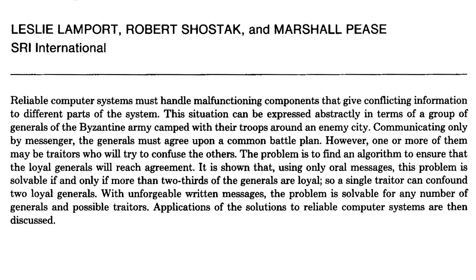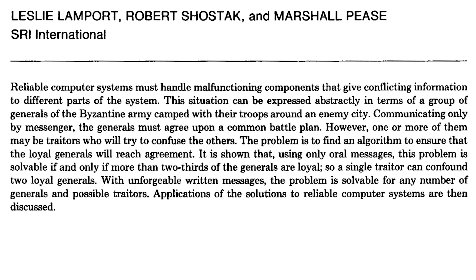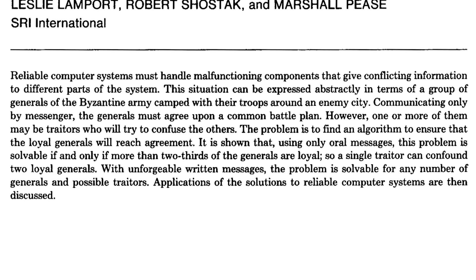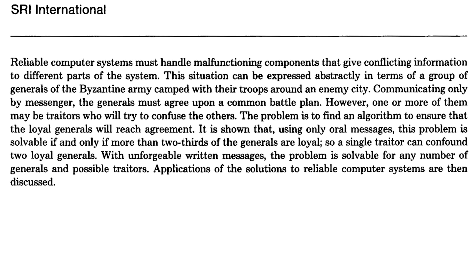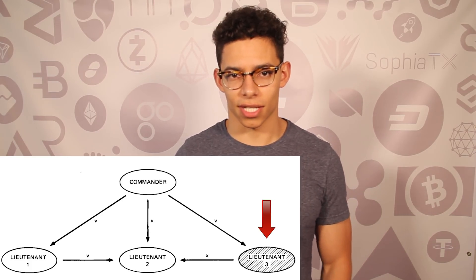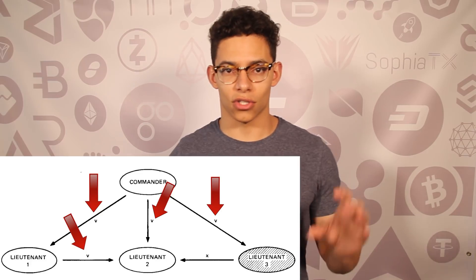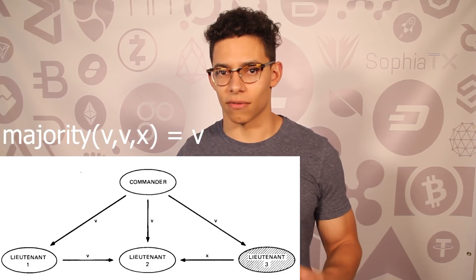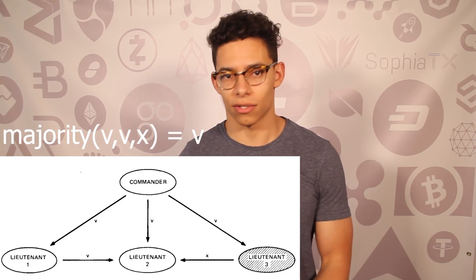Quoted from the research paper: 'The generals must agree upon a common battle plan. However, one or more of them may be traitors who will try to confuse the others. The problem is to find an algorithm to ensure that the loyal generals will reach agreement. It is shown that using only oral messages, this problem is solvable if and only if more than two-thirds of the generals are loyal.' In the illustration, Lieutenant three is a malicious actor. The honest counterparts decide on V, while Lieutenant three tells Lieutenant two the decision is X. The final majority vote is V, since two of three votes are V — consensus is reached by the honest majority.